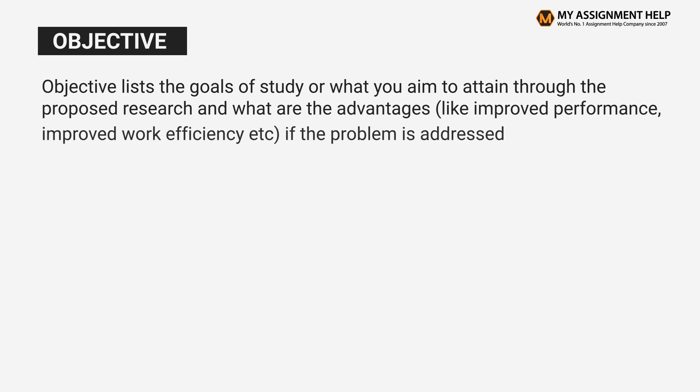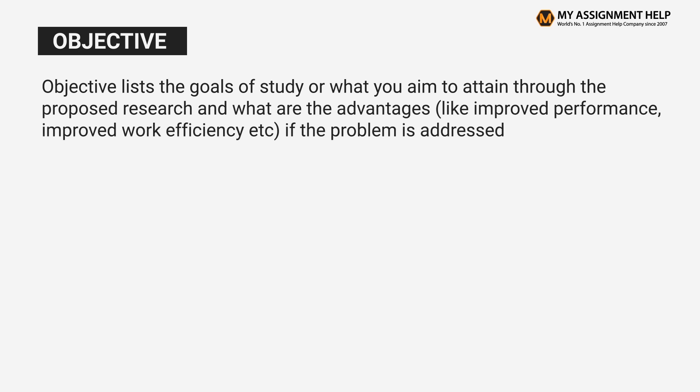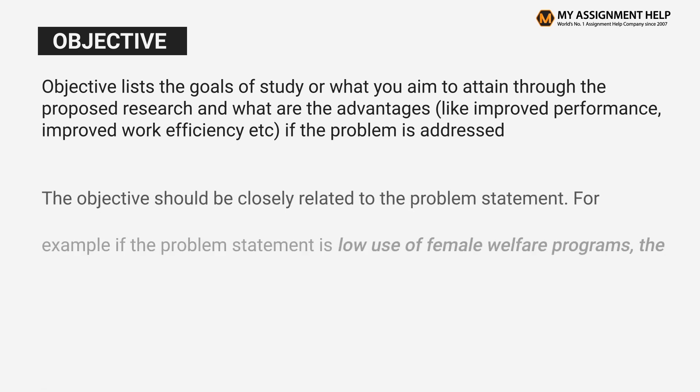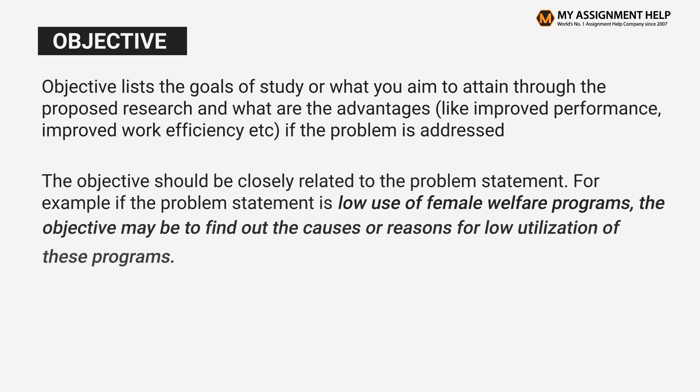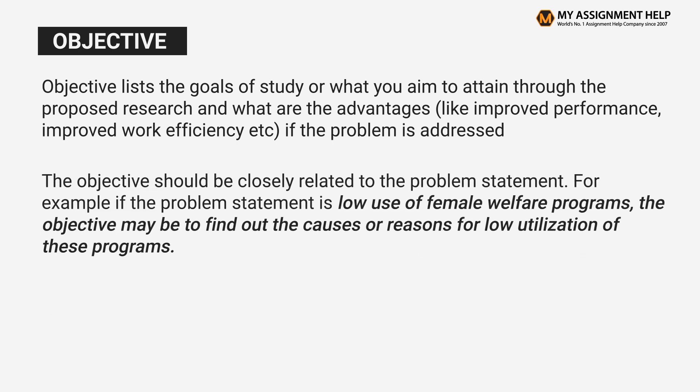Objective. The objective section lists the goals of the study — what you aim to attain through the proposed research and the advantages if the problem is addressed. The objective should be closely related to the problem statement. For example, if the problem statement is low use of female welfare programs, the objective may be to find out the causes or reasons for low utilization of these programs.